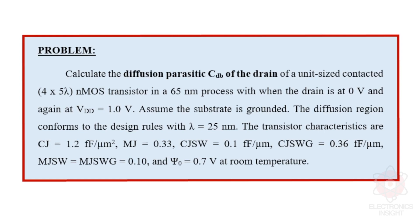The transistor characteristics given are: CJ equal to 1.2 femtofarad per micrometer squared, MJ equal to 0.33, CJSW equal to 0.1 femtofarad per micrometer, CJSWG equal to 0.36 femtofarad per micrometer, with grading coefficients for the sidewall and the sidewall capacitance common to the gate and channel given as 0.1. Psi-naught, the built-in potential, is 0.7 volt at room temperature.